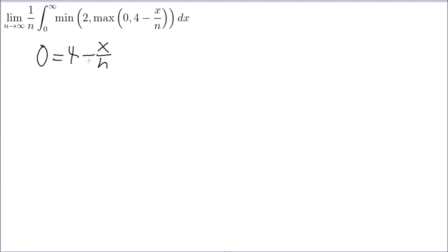So, when is 0 equal to 4 minus x over n? If I solve for x, solving for x will give me, this will give me x equals 4n. Okay, so x equals to 4n. So there's an intersection at x equals to 4n. So we might do something about that.